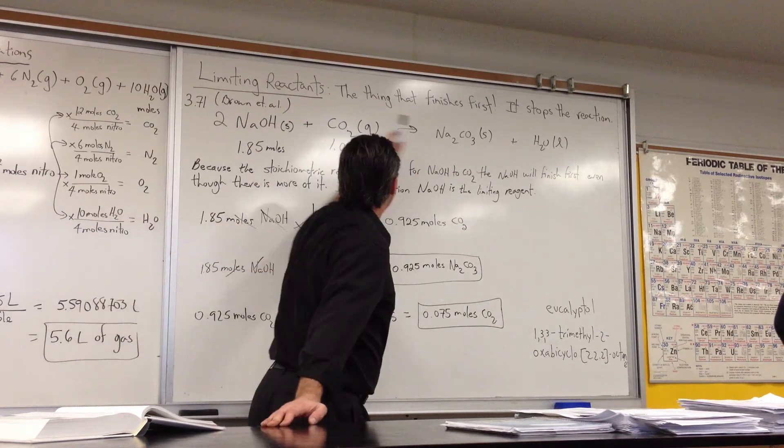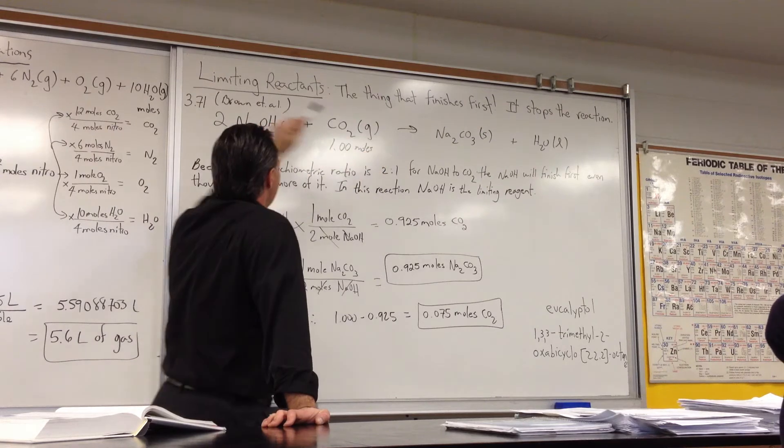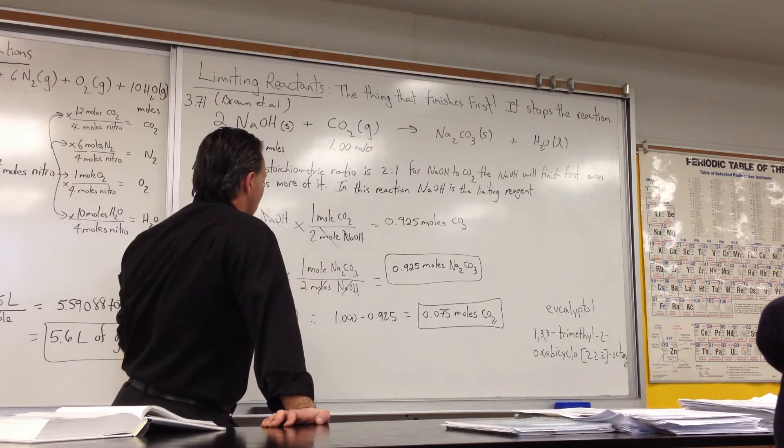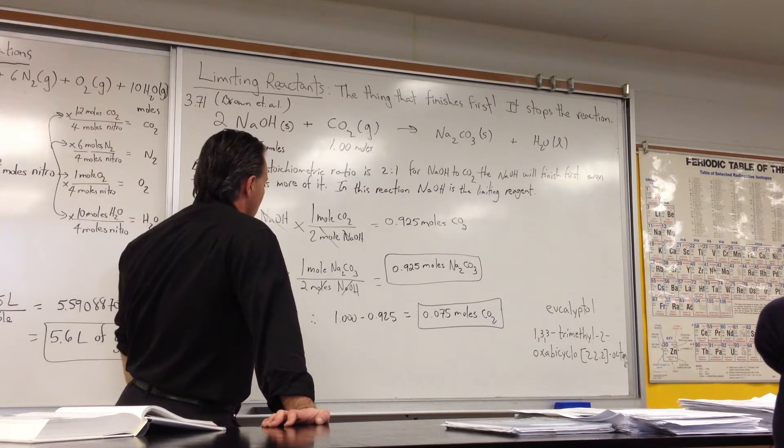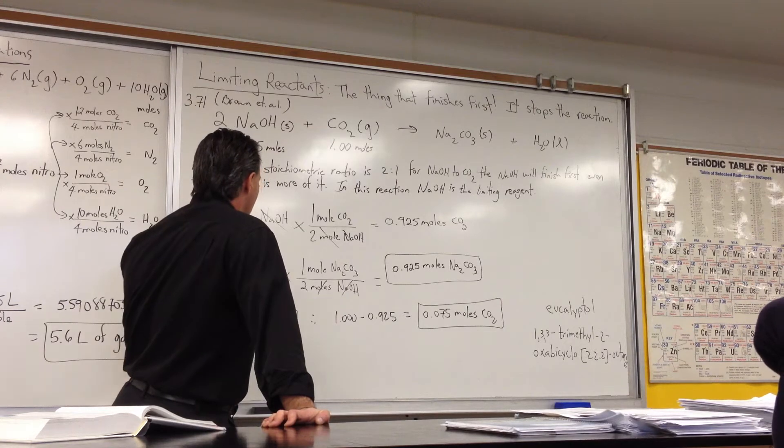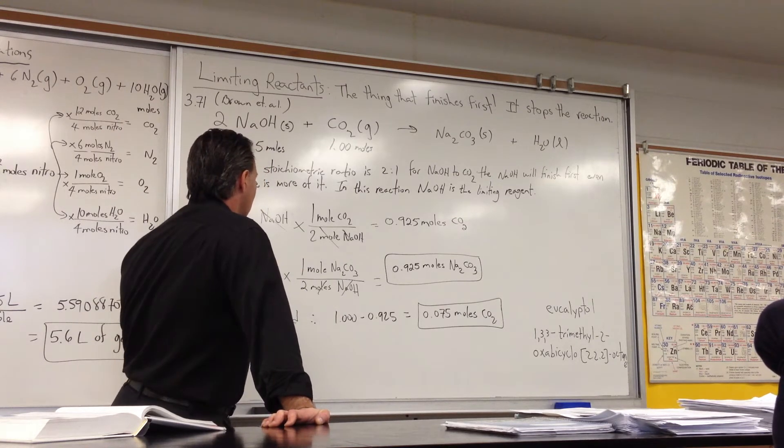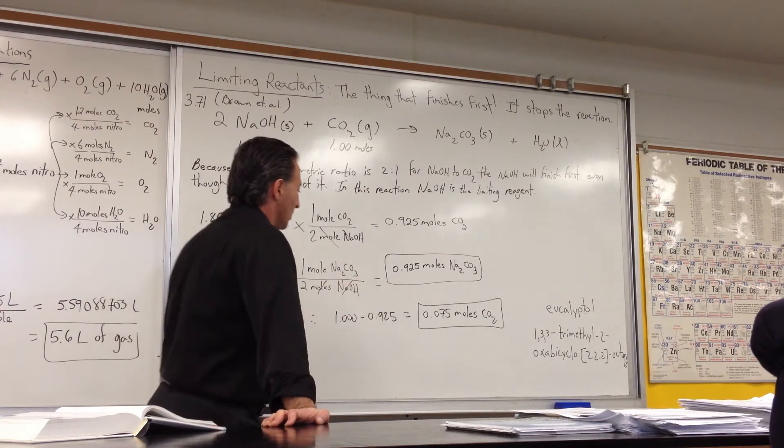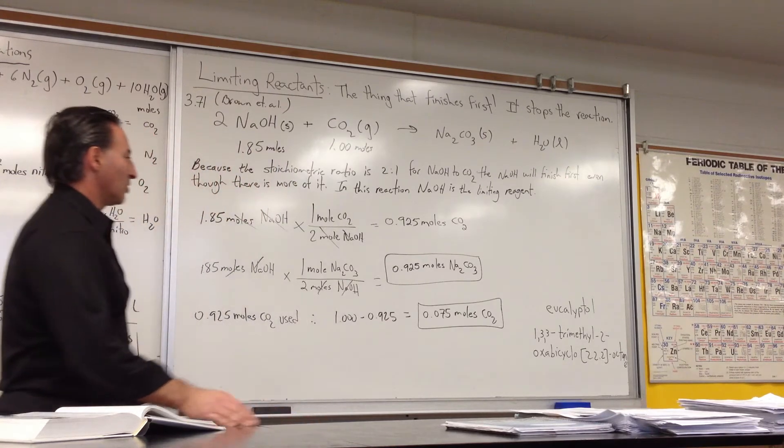One mole of sodium carbonate is produced for every two moles of sodium hydroxide used. You write the stoichiometric coefficient like that, so that sodium hydroxide cancels, and you get that produces 0.95 moles of sodium carbonate.